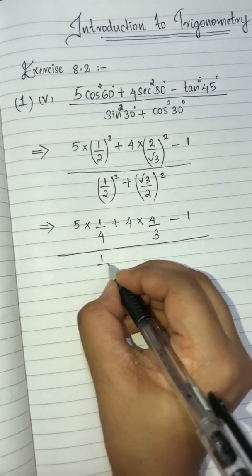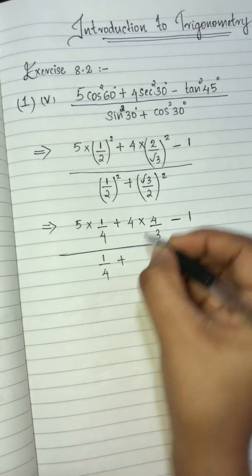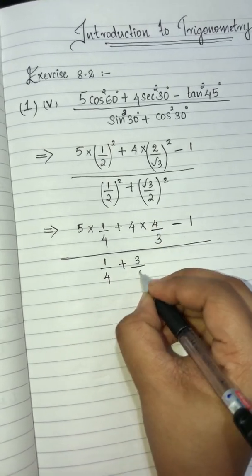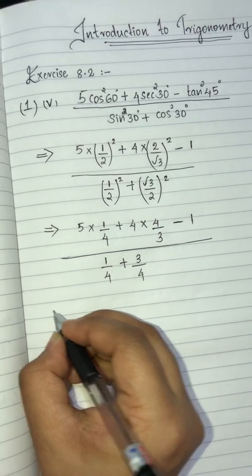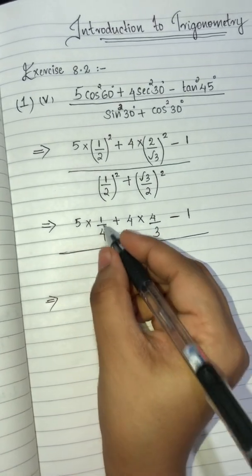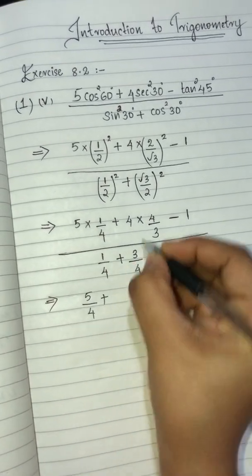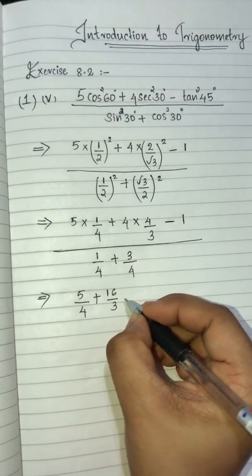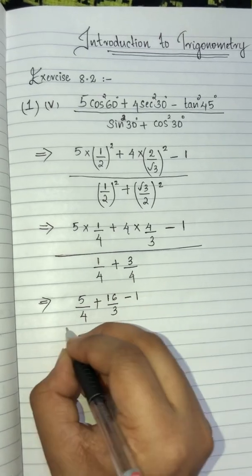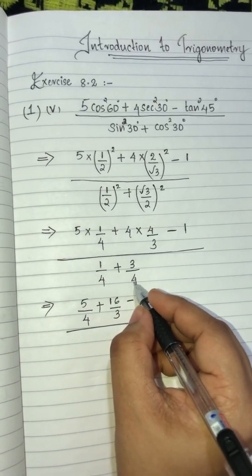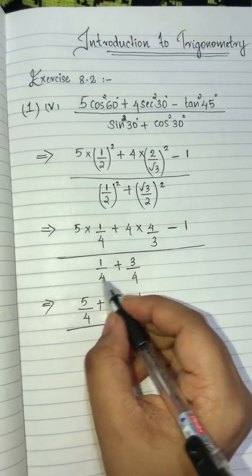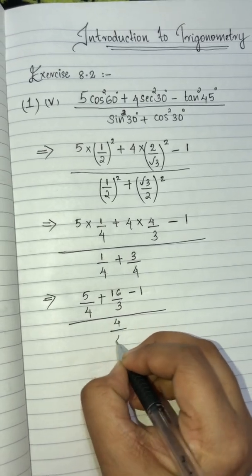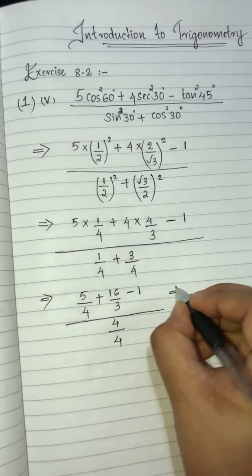1/4, plus (√3/2)² — √3 × √3 = 3, so 3/4, giving us 3 by 4. Then 5 into 1/4 = 5/4, plus 4 into 16/3, minus 1, whole divided by denominator: 1 + 3/4 = 4/4 = 1.